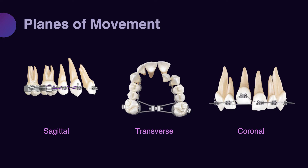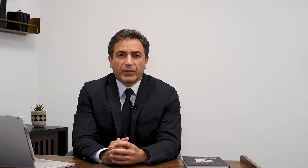After defining the type of tooth movement for target and anchor unit, we need to decide which plane of space we want to achieve the movement in. Anatomically, we divide the space into three planes: sagittal plane, transverse plane, and coronal plane — three perpendicular planes that together describe our movement. Most of the time, especially if the target unit is large, we like to move in one plane at a time. However, sometimes to decrease treatment duration, we may decide to move the target unit in two or three planes simultaneously, producing a unique combined plane of movement.